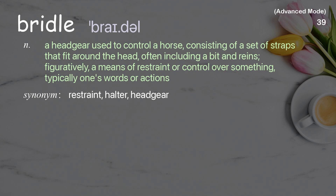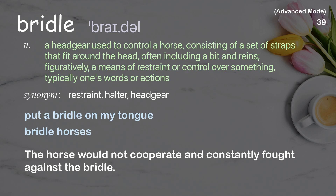Bridle. A headgear used to control a horse, consisting of a set of straps that fit around the head, often including a bit and reins. Figuratively, a means of restraint or control over something, typically one's words or actions. Examples: put a bridle on my tongue; bridle horses. The horse would not cooperate and constantly fought against the bridle.